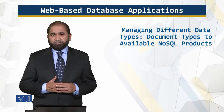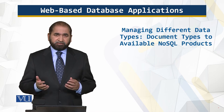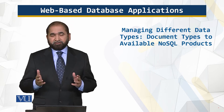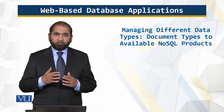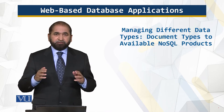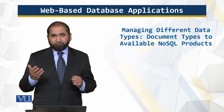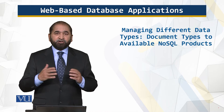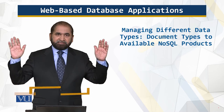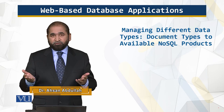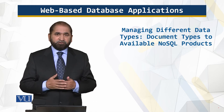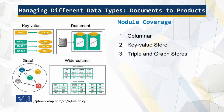In this module we will talk about the different document types or data structures supported by NoSQL and what the products are. In the context of NoSQL, we are working with datasets whose structure changes over a period of time and whose relationships are not defined. If you tell this to a relational database architect, they will raise their hands — the relational model was not meant for this kind of data structure, which is why we have NoSQL.